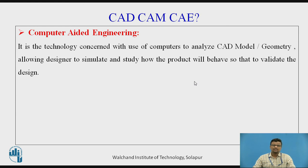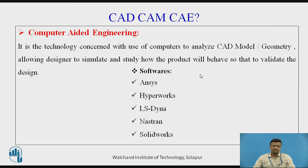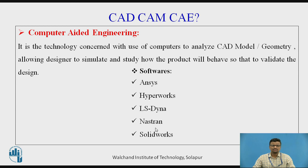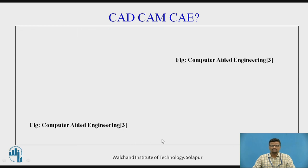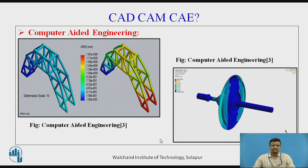Computer-aided engineering is the technology concerned with using computers to analyze the CAD model, allowing the designer to simulate and study how the product will behave, in order to validate the design. Different software used in computer-aided engineering or engineering analysis include ANSYS, Hyperworks, LS-Dyna, Nastran, and SolidWorks.